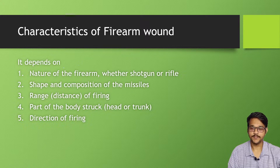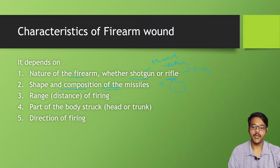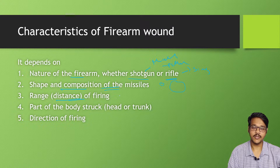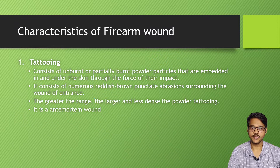The characteristics of firearm wounds depend on various factors: the nature of the firearm — whether it is a shotgun or rifle (a rifle produces a single wound, while a shotgun causes multiple wounds due to pellets); the shape and composition of the missile (for example, a dum-dum or hollow point bullet may cause larger wounds due to mushrooming); the range of firing (closer range causes more injury); the part of the body struck; and the direction of firing, including whether the bullet ricocheted from another object.